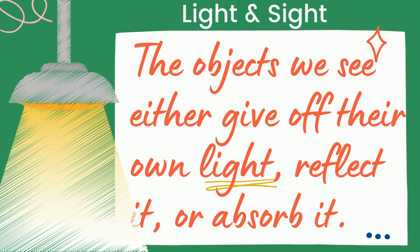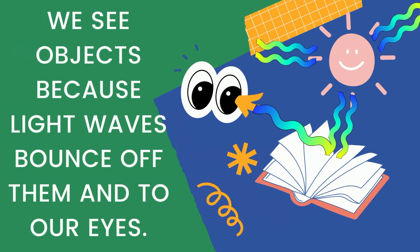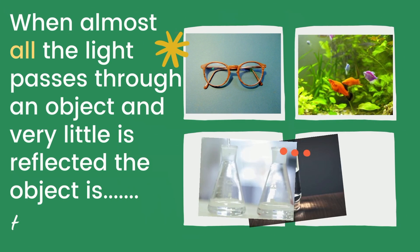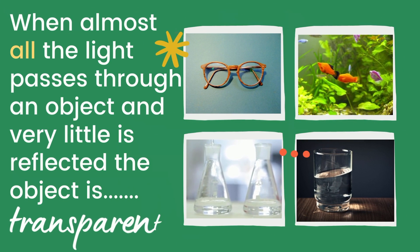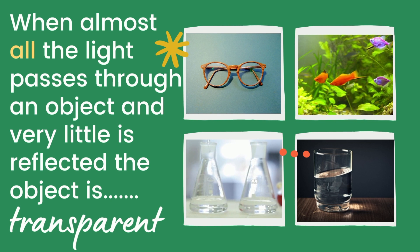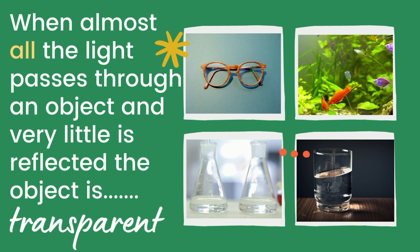The objects we see either give off their own light, or they reflect it or absorb it from some other light source. We see objects because light waves bounce off of those objects and go to our eyes, allowing us to see them.